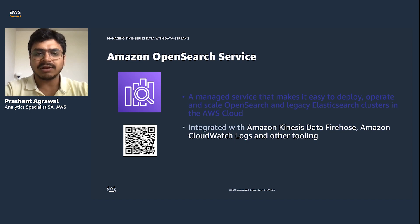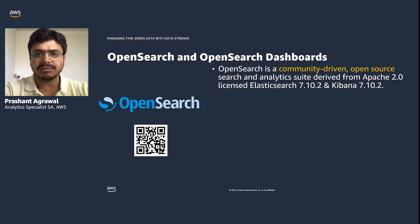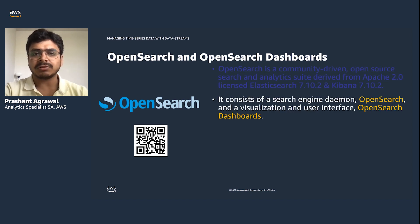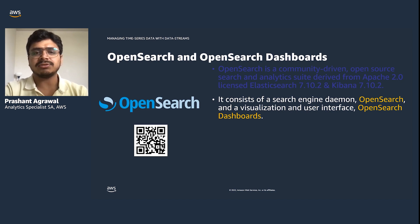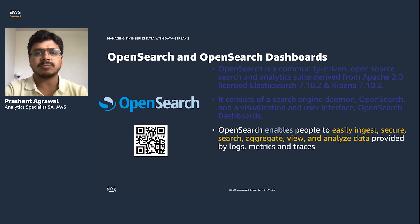OpenSearch is a community-driven, open-source search and analytics suite derived from the Apache 2.0 licensed version of Elasticsearch 7.10.2 and Kibana 7.10.2. It consists of a search engine that provides a way to perform search on your data, as well as a visualization interface called OpenSearch Dashboards to analyze logs. Using OpenSearch, you can index data of any type such as logs, metrics, and traces, and then use the dashboard or API to perform aggregations on that data.